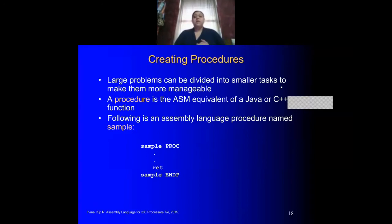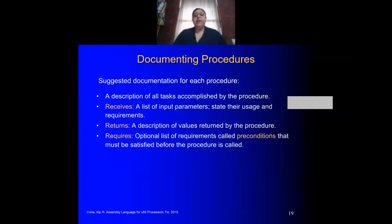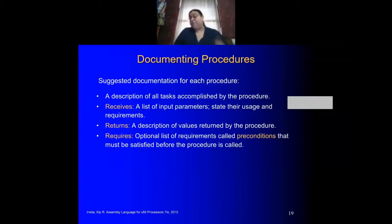There are different things that we need to create a procedure. We have here an example — this is a procedure that can return items and can also receive parameters. Whenever we're creating a procedure, this is just part of good documentation: let your other programmers know what it is that this procedure is receiving — registers, for example — and what it's returning, such as the sum of numbers returned in register EAX, and any specific requirements it may need.